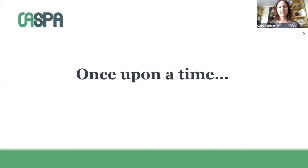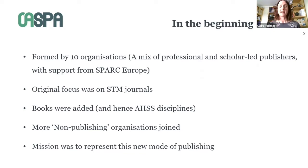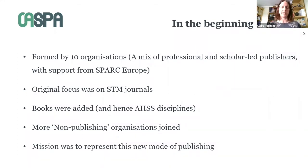So if we go right back to the beginning, why was OASPA established? OASPA was initially formed by 10 organizations. They didn't all have the same approach. There was a mixture of scholar-led and professional publishers like PLOS, Hindawi, Copernicus, and in fact SAGE was involved as well, so there has been mixed model representation from the beginning. They were exploring this new open access model and were able to come up with some shared values to set standards for open access publishing.